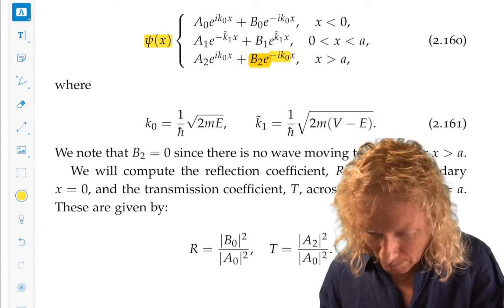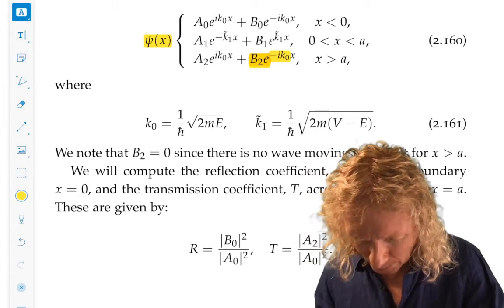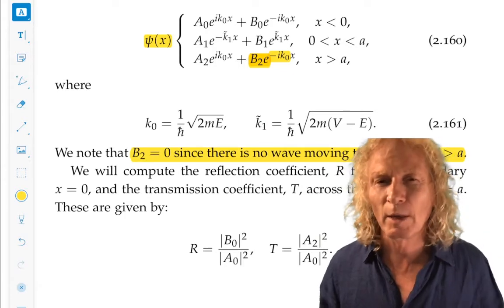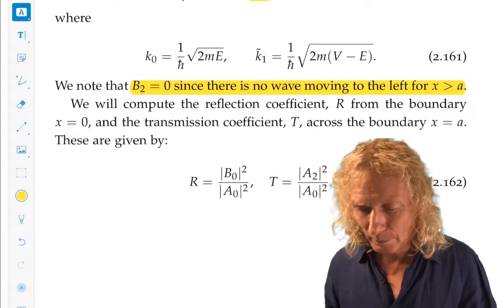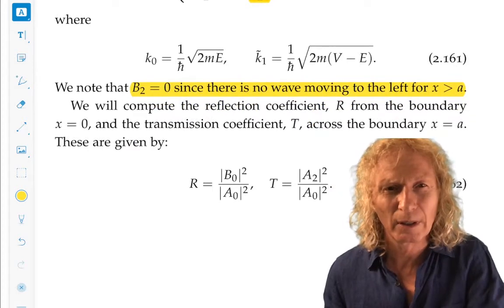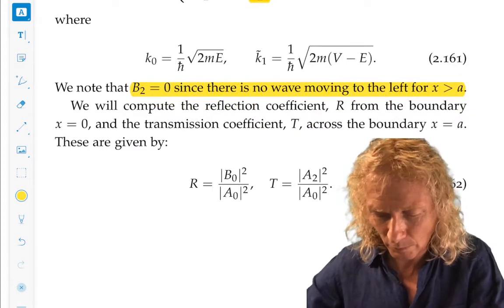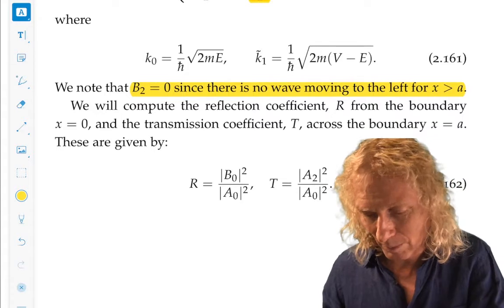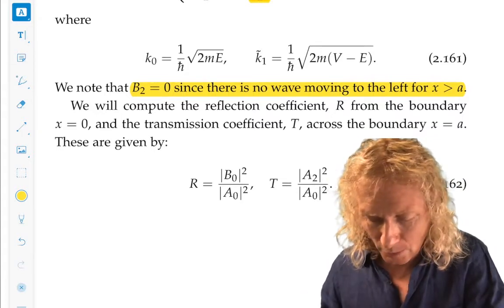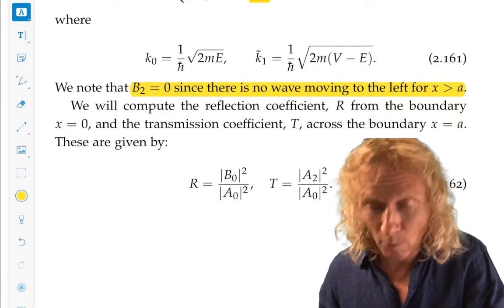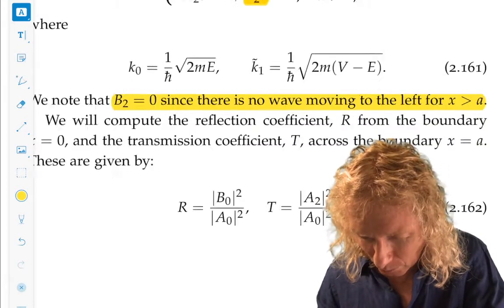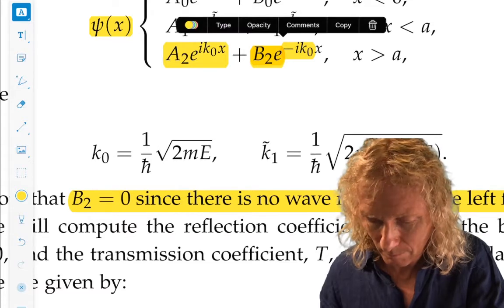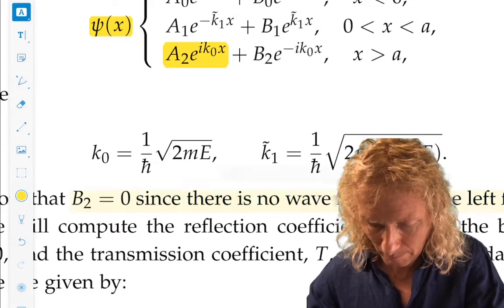In analogy with last time, B2 is zero since there is no wave moving to the right for x greater than a. Everything is moving to the left once we get to x greater than a.